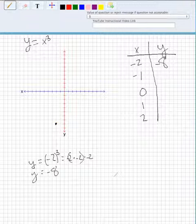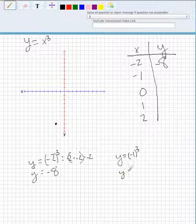Then we're going to plug in y equals negative 1 cubed, not squared but cubed. So y is going to equal negative 1 times negative 1, which is positive 1, times another negative 1, which is negative 1.